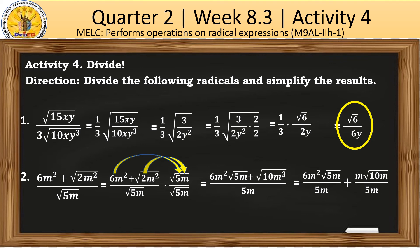We are going to divide both terms in the numerator by 5m and the result will become 6m square root of 5m over 5 plus the square root of 10m over 5. We simply removed or canceled the common factors in the numerator and the denominator to get this final answer.